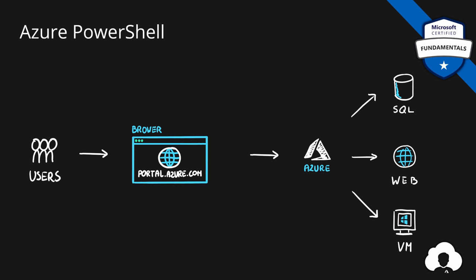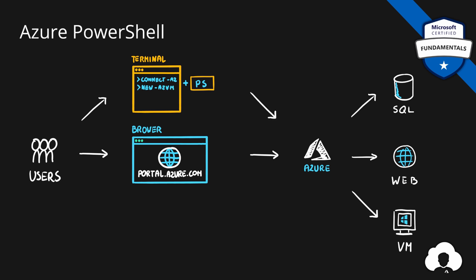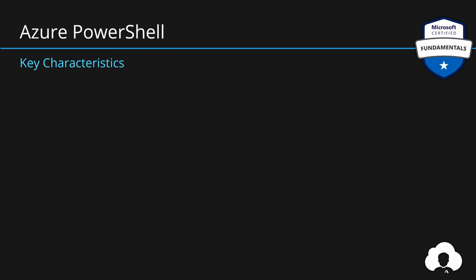Besides the classic approach of using a browser and accessing Azure through Azure Portal, you can also access Azure through a terminal. This works for both Windows, Linux and macOS. You just need to install PowerShell modules and you will be able to connect to Azure to work with Azure resources through a command terminal. This is one of the ways of managing Azure resources in an imperative way. Azure PowerShell is simply a module that Microsoft created for the popular PowerShell scripting language, designed to help with automation tasks. With this module and PowerShell language, you can create very complex logic using scripts.